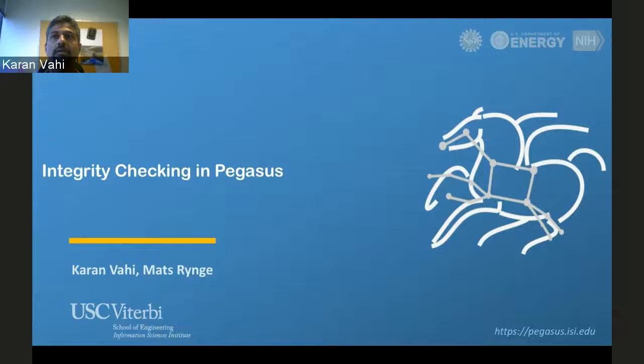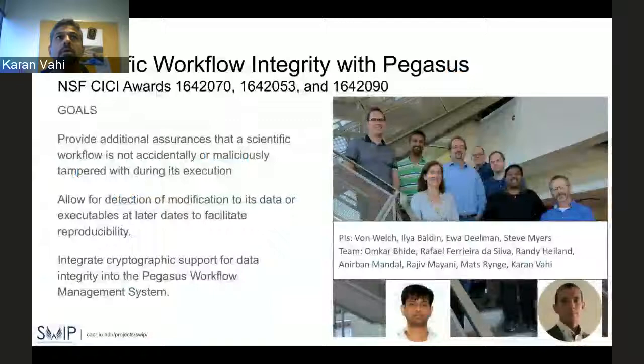We are trying to put integrity checking automatically into Pegasus so that when user workflows run, before any job starts, their datasets are automatically checked to make sure there's no corruption that has happened in transit or at multiple points. This work was done as part of the SWIP grant.